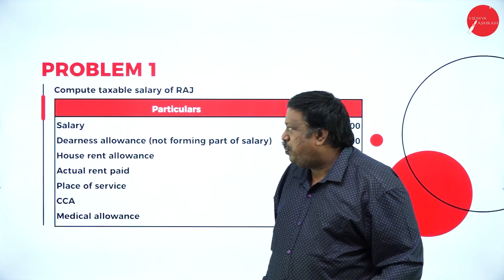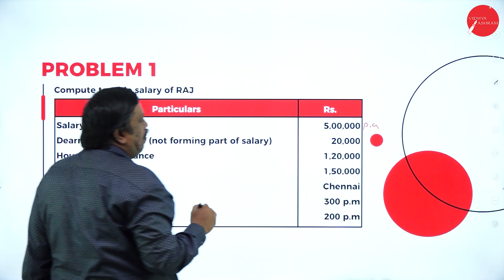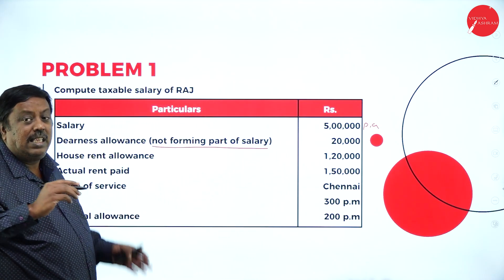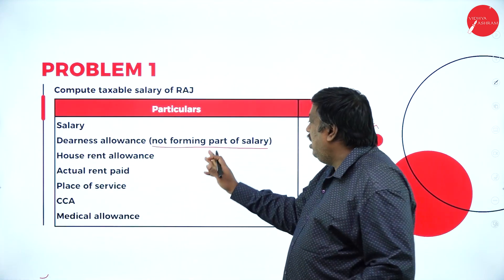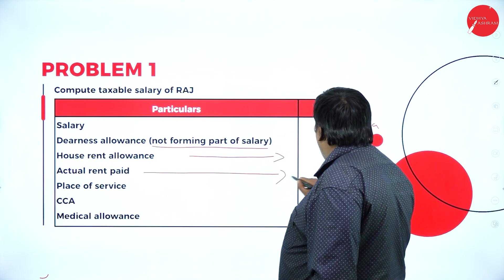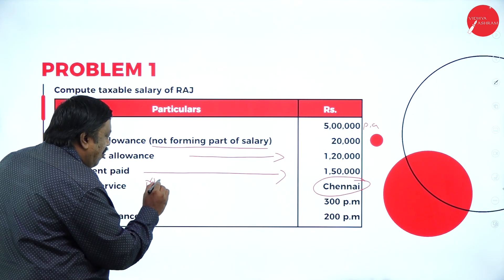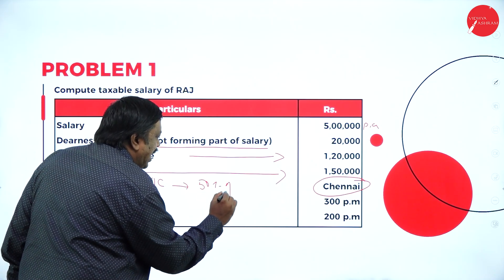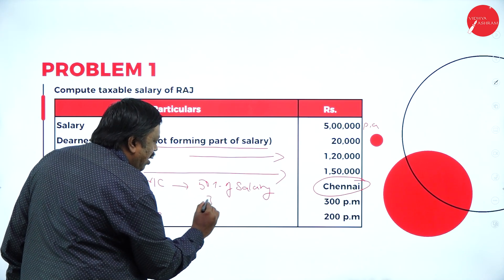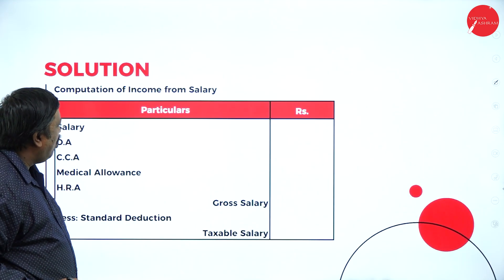The first problem: salary is five lakhs per annum. They have not mentioned anything after the amount, so it is five lakh per annum. DA is not forming part of salary — meaning for retirement benefits and other calculations, wherever the term salary comes, we should not consider DA. HRA received is one lakh twenty thousand per annum from the employer. I am paying rent of one lakh fifty thousand per annum and residing in Chennai, which is a metropolitan city. For a metropolitan city, 50 percent of salary is taken for HRA calculations. CCA and medical allowance are fully taxable.